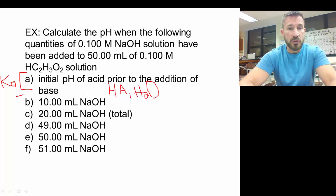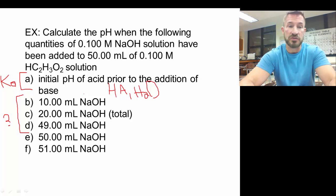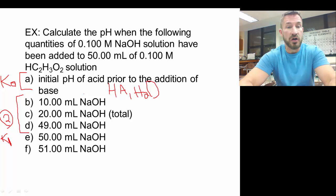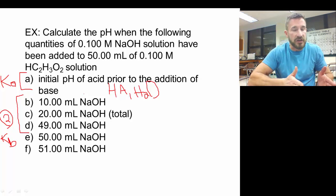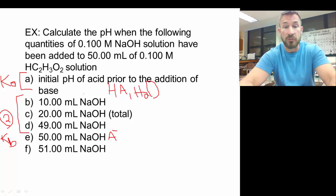From the initial point up to the equivalence point — points B, C, D, and anything after zero up to 50 milliliters — it's going to be a special type of calculation: the buffer calculation. The major species this time are HA, hydroxide, and water. Sodium is also present but doesn't react. Anytime you have a strong base and there's something that can react as an acid, it's going to pull off that proton. So the reaction is our weak acid plus the strong base from the burette, producing A⁻ and water.